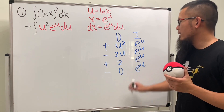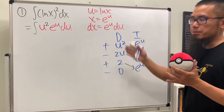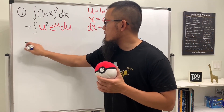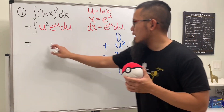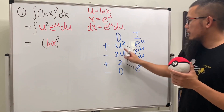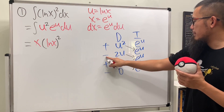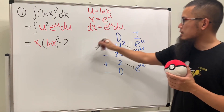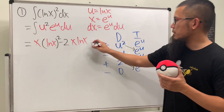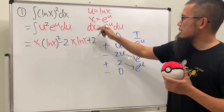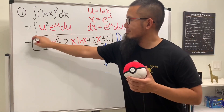We pretty much have the answer already: this times this, this times this, and this times that. We know that u is equal to ln x, so we'll just plug that in. We'll have (ln x) squared times x, then minus 2 ln x times x, then plus 2 times x. Put on the plus c. That's the answer for that.